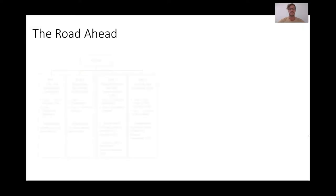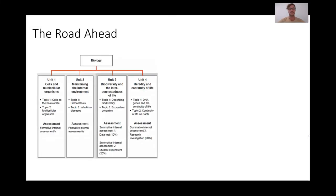So the road ahead: we have biology over years 11 and 12 divided into units one and two, and units three and four. Our current year 12s have already studied units three and four, and so now you will be finishing on unit one, cells, and unit two, maintaining the internal environment, where we talk about homeostasis and infectious disease. Current year 11s obviously start on units one and two and will finish on biodiversity and the genetics unit, unit four.